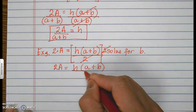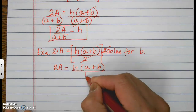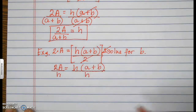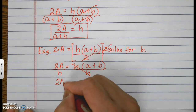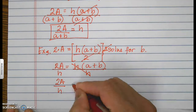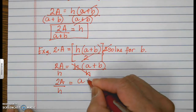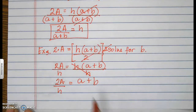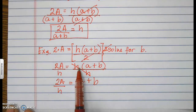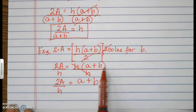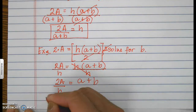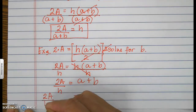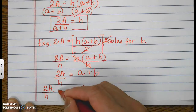H is multiplication, and the inverse of multiply is divide. So divide by h — this turns to 1. Therefore 2A over h equals a plus b. The parentheses can be removed because there is a positive 1 in front, and positive 1 times any number is the number itself. Now b equals 2A over h minus a.